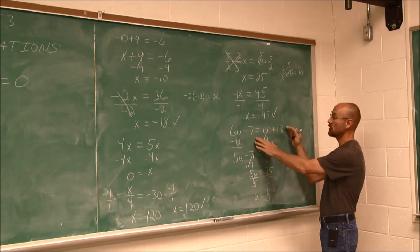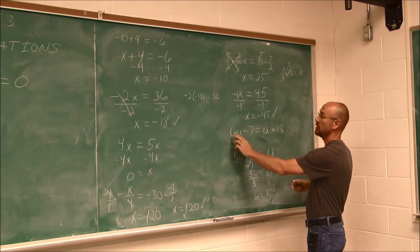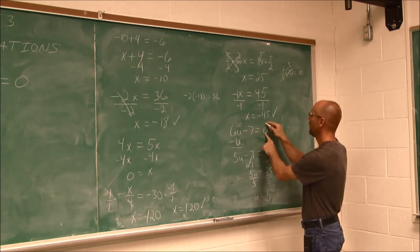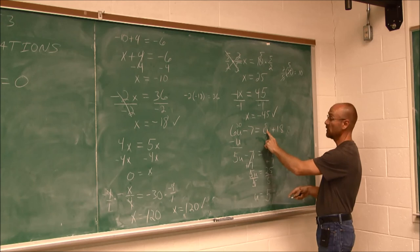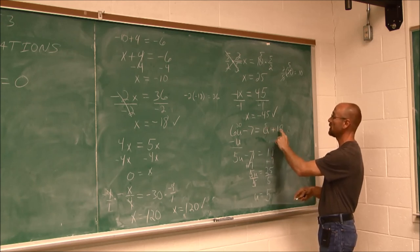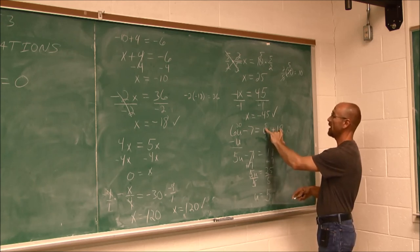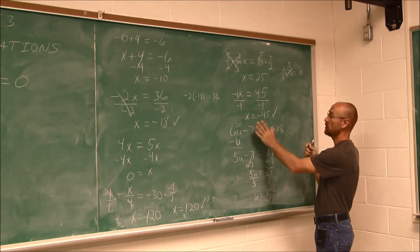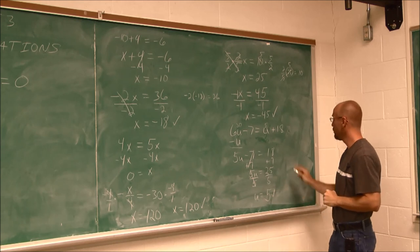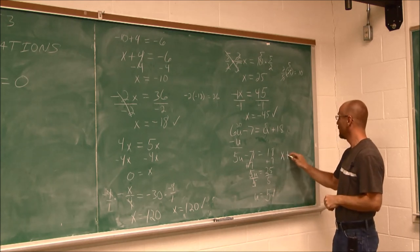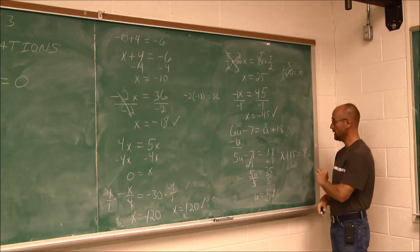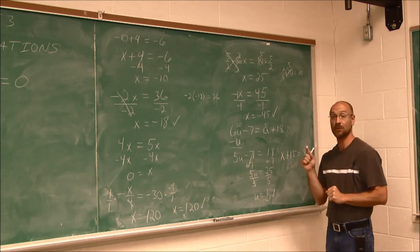We always check our work — go to the original problem. 6 times 5 is 30, minus 7 equals 23. Substituting u equals 5 on the right: 5 plus 18 is 23. So 23 equals 23 — I checked my work. The example that was erased was x plus 15 equals 8. Try this one on your own and see what you get. And remember, check your work.